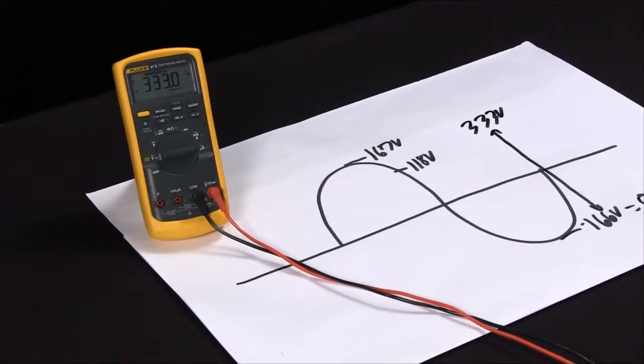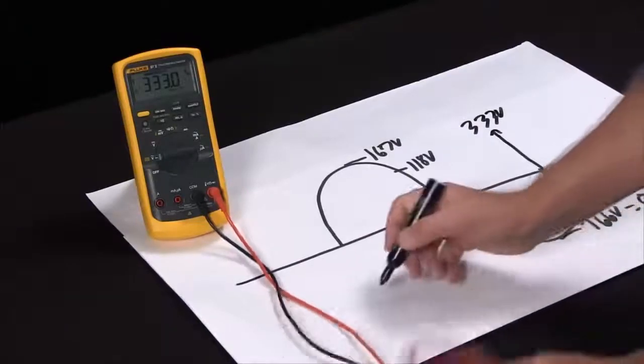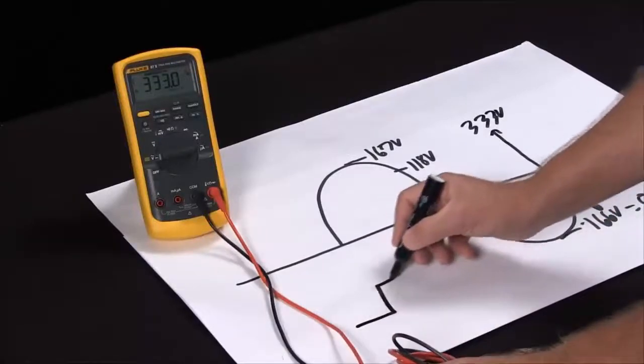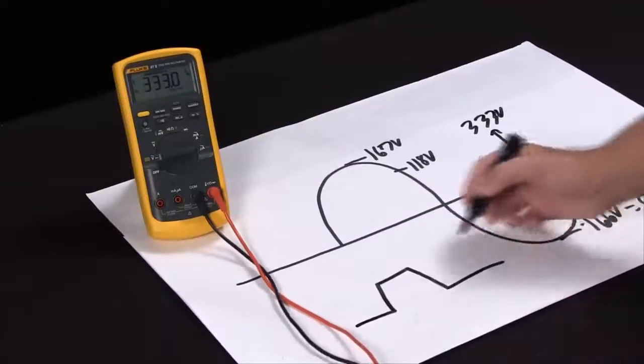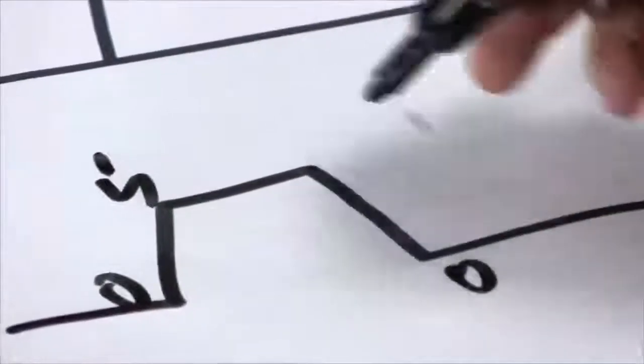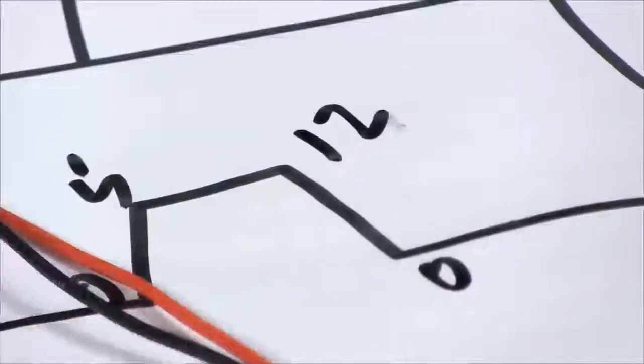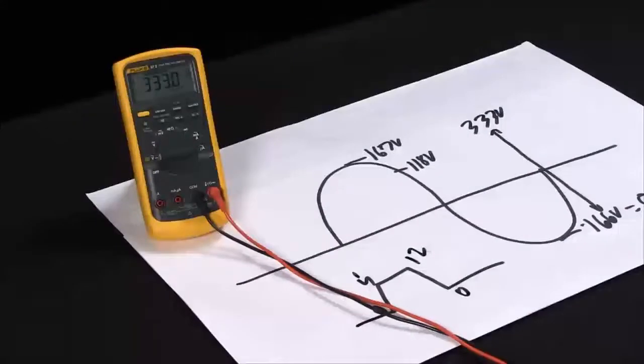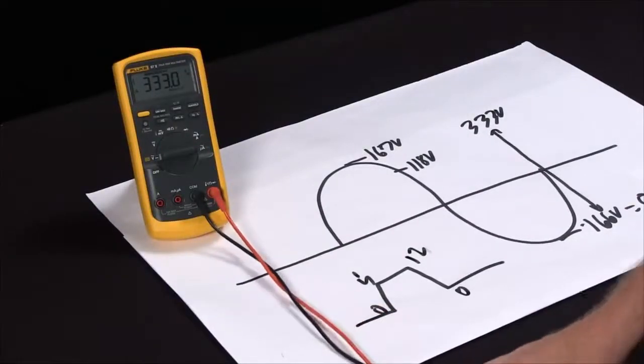Where for a sine wave this might not be so handy, when you're working on a square wave coming off an encoder what you really want to see is this zero to five volts, is it zero to 12 volts. So by having that relative mode and the peak min max you'll be able to check your square waves a whole lot better.